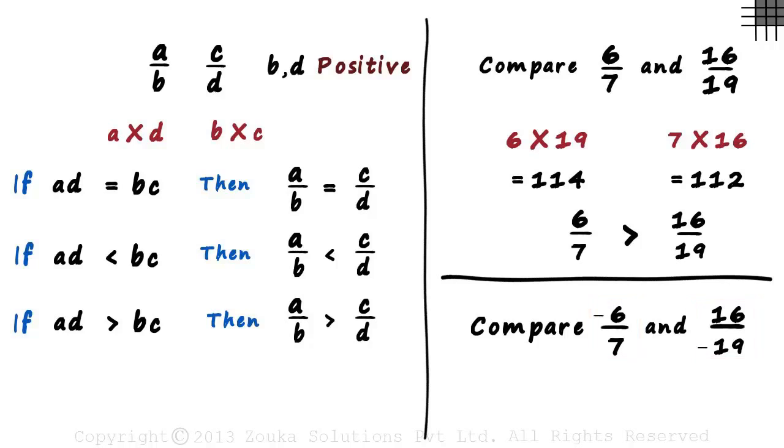Here, the denominator of the second rational number is negative. Does that mean we cannot compare these two rational numbers using this technique?